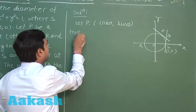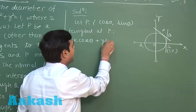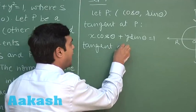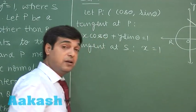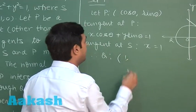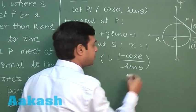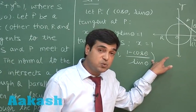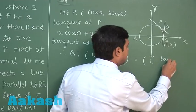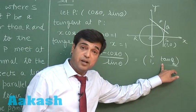Tangent at P is x cos θ + y sin θ = 1, and tangent at S is simply x = 1. Solving the two equations by substituting x = 1, we get y = (1 − cos θ)/sin θ. Using the identities, 1 − cos θ = 2 sin²(θ/2) and sin θ = 2 sin(θ/2) cos(θ/2), we get point Q as (1, tan(θ/2)).